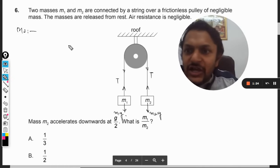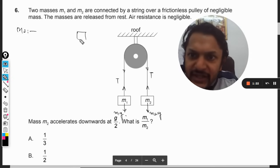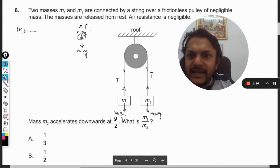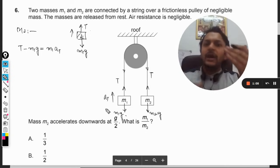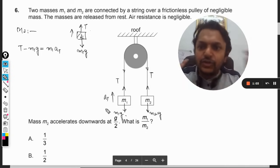First of all, the free body diagram of the first mass. This is now moving upward, so the equation will be T minus m1g equals m1 into a. Now a is the acceleration with which the mass is going up. So this becomes the first equation.